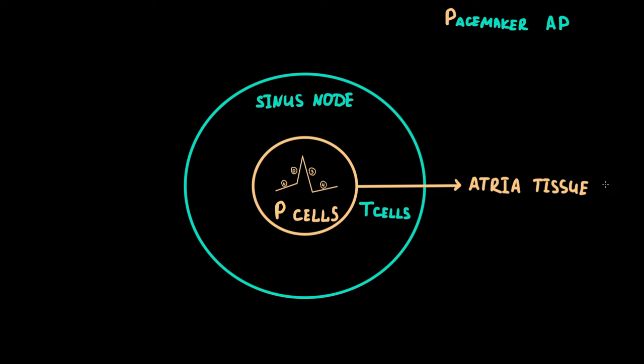Sinoatrial exit block can be divided into first, second, and third degrees, analogous to those occurring at the atrioventricular node.